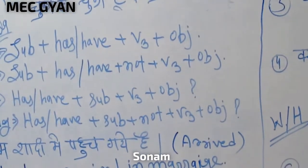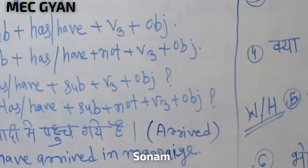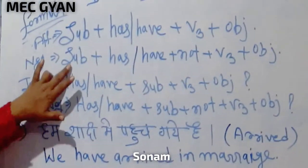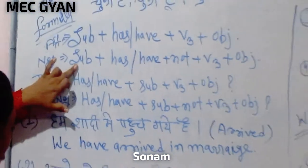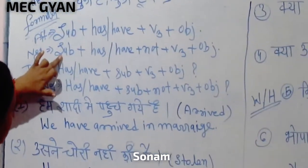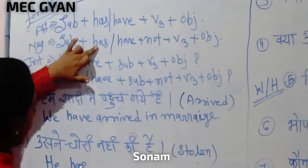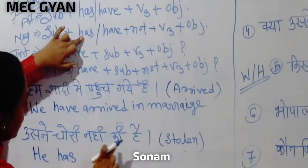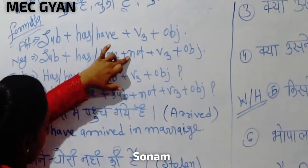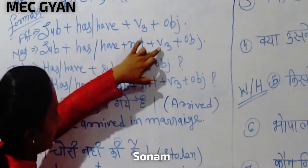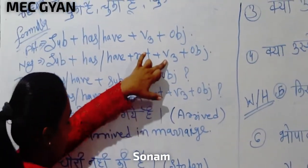And its negative form is: he has not done a job. So, according to the formula, he has not done a job. Third form.